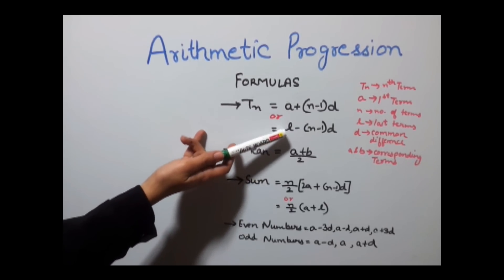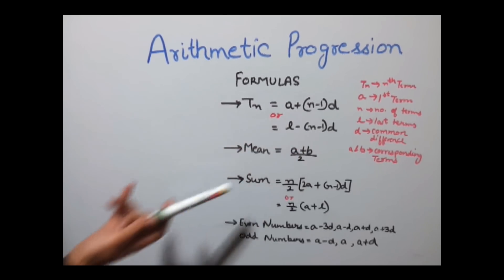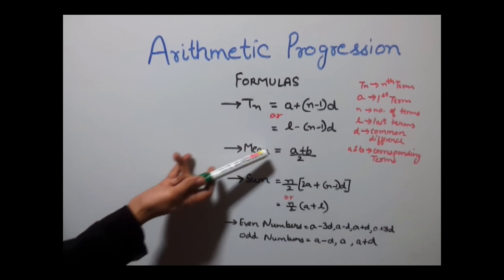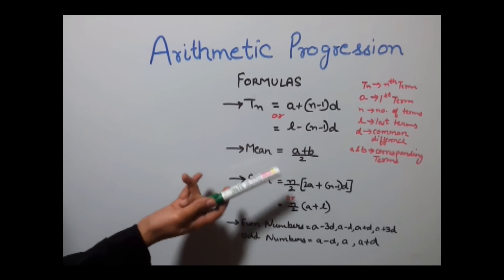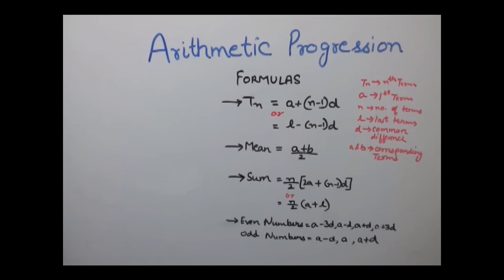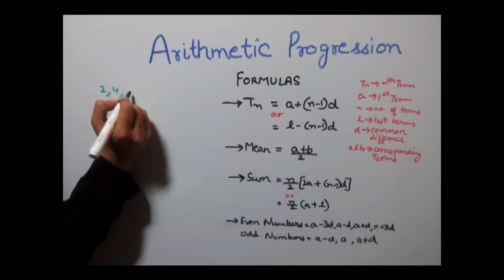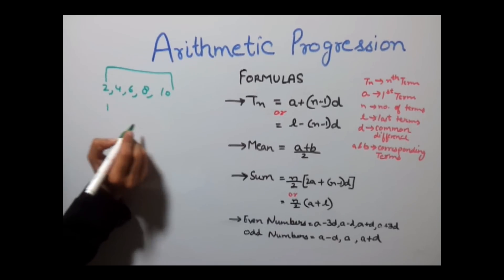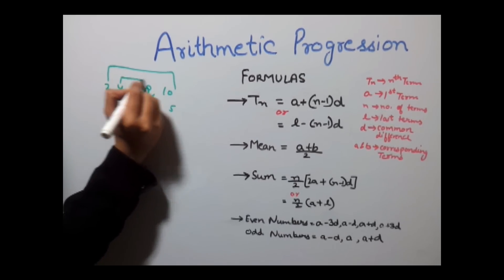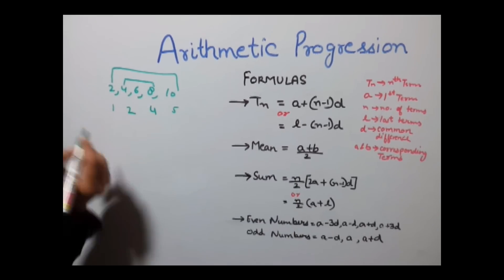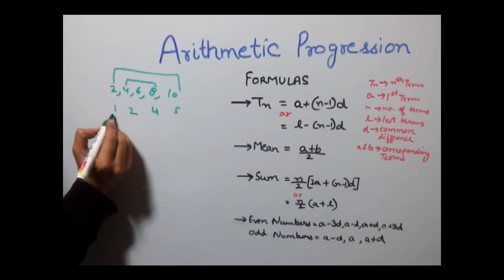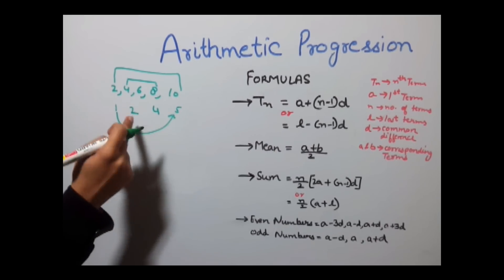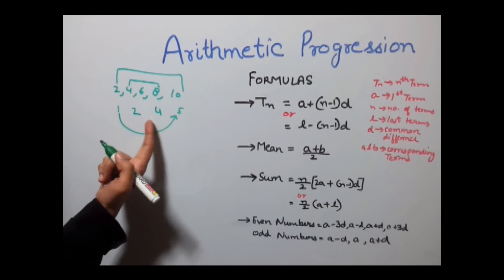If the last term is given, you can use the formula L − (N − 1) × D, where L represents the last term. To find the mean of any arithmetic progression, the formula is (A + B) / 2, where A and B are corresponding terms. For the series 2, 4, 6, 8, 10 — corresponding terms are 2 and 10 (first and fifth), or 4 and 8 (second and fourth). Their sums are equal, both giving 12, making them corresponding terms.